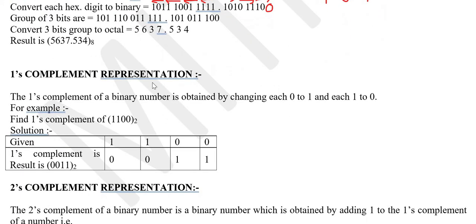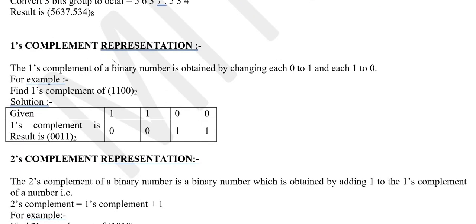Next is one's complement and two's complement — very important in binary. One's complement of any number is simply its inversion: wherever there is a 1, replace it with 0, and wherever there is a 0, replace it with 1. For example, the one's complement of 1100 is 0011.